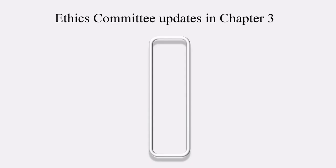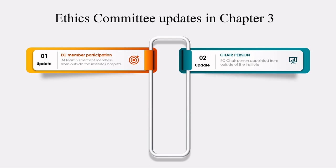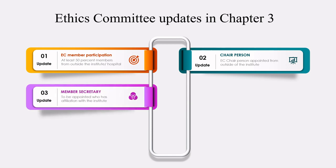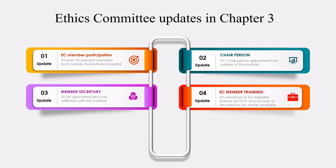The major changes for the Ethics Committee came under Chapter 3 of the NDCT Rules 2019. In terms of composition, at least 50 percent of the members should be from outside the institute or hospital, to maintain proportionality and uniformity of decisions. The chairperson of the Ethics Committee should be from outside and not affiliated with that particular institute. The member secretary, however, should be affiliated with that institute. So after 2019, the chairperson shall always be from outside and the member secretary from within the institute.